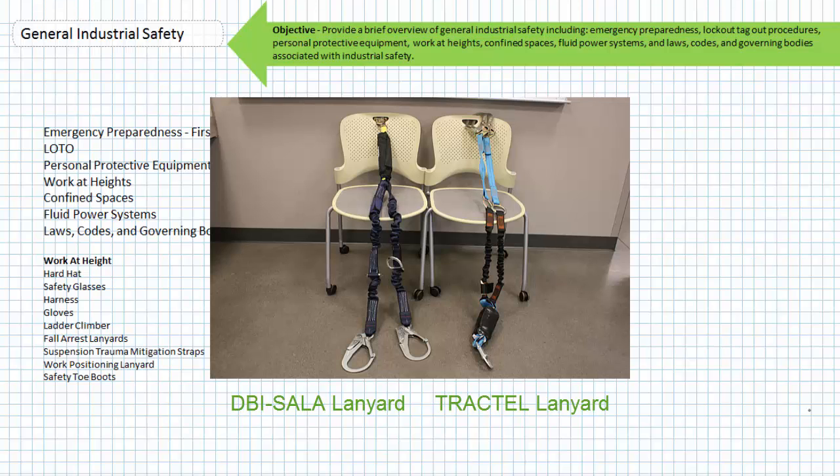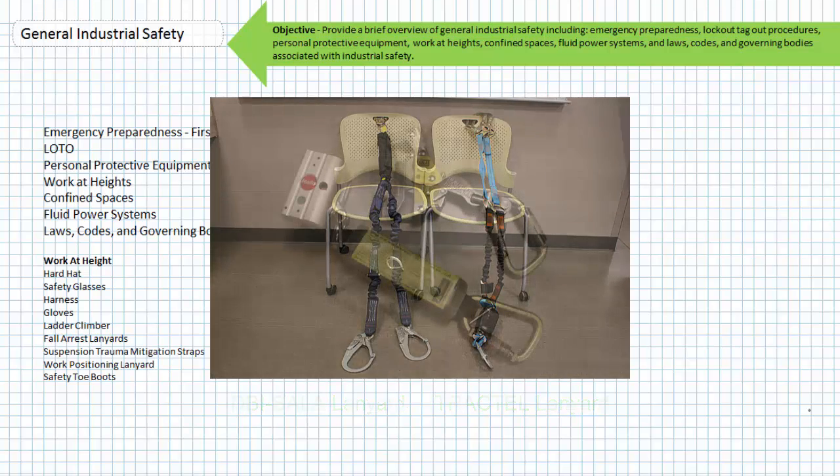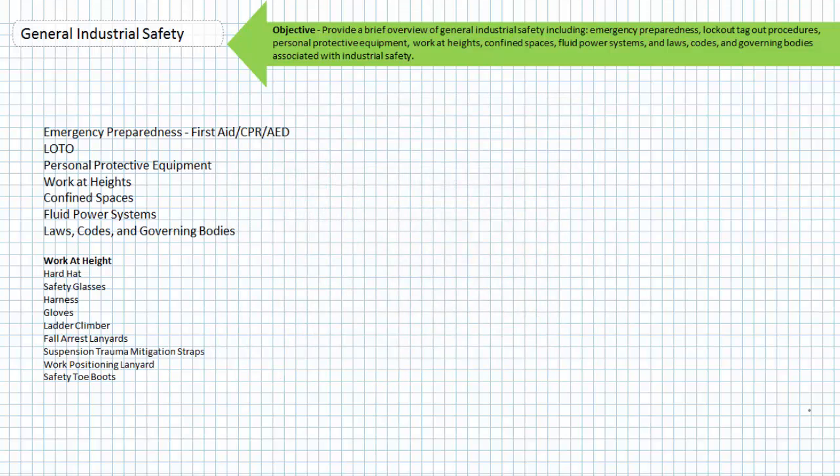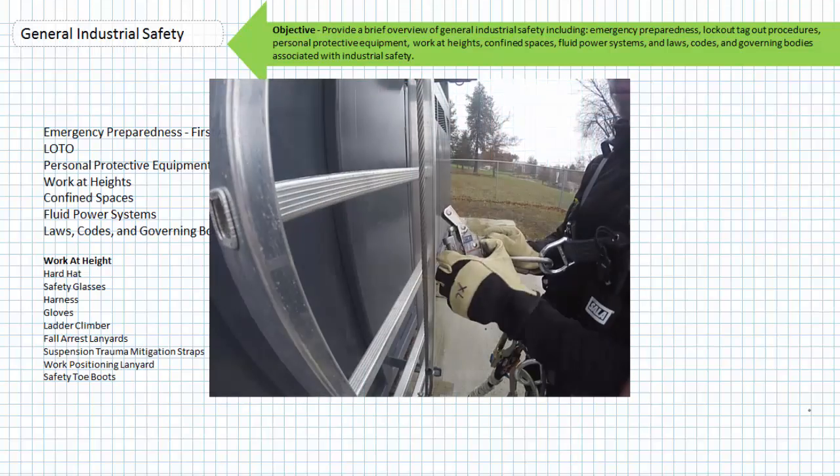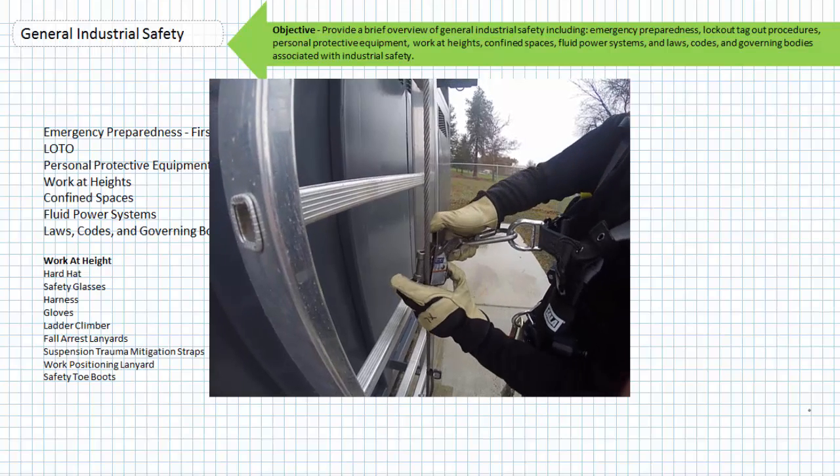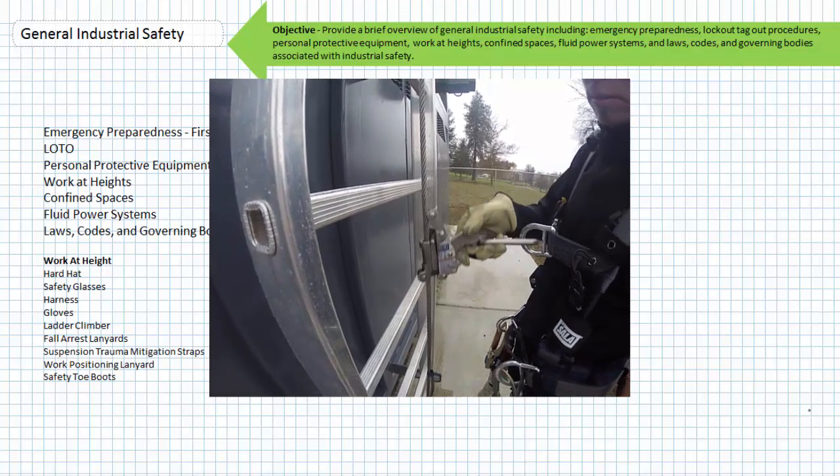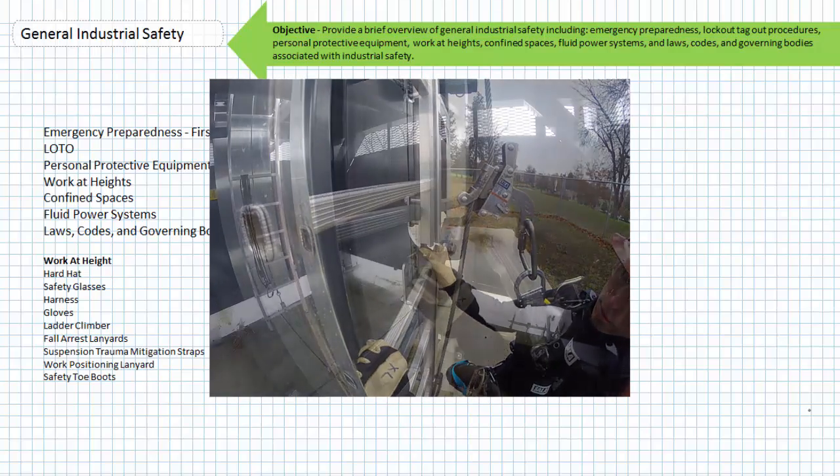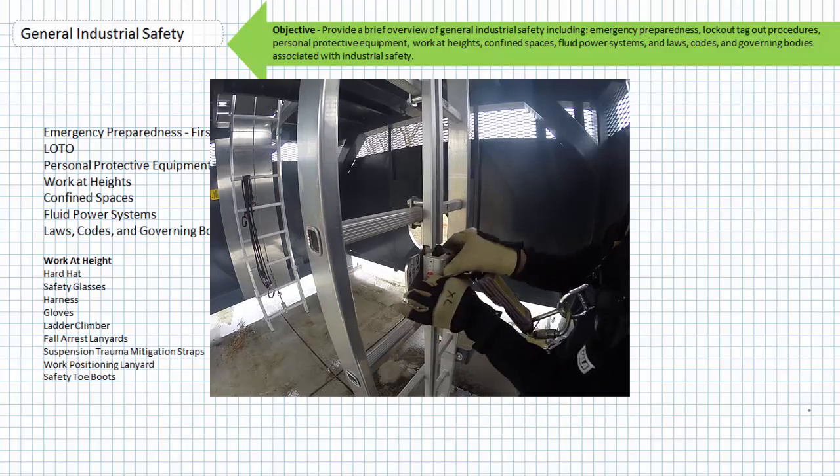Outside of the fall arrest system, a number of other supporting devices are used in work-at-height scenarios. Ladder climber: a camming device that allows upward and downward travel along a secure cable or rail. However, upon rapid descent, the camming device is activated and locks the climber in place. Here's a ladder climber being installed on a cable and on a rail.